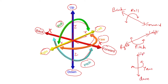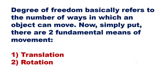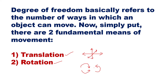So this is how the six degrees of freedom are defined — these are the basic motions of a robot. Degree of freedom basically refers to the number of ways in which an object can move. The two basic motions are translation motion and rotational motion. We have three translation motions and three rotational motions, so three plus three gives us six degrees of freedom.